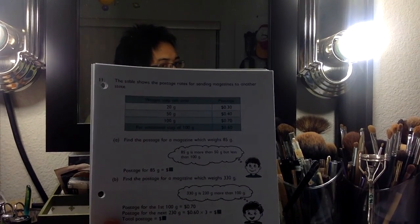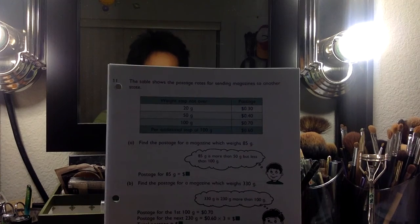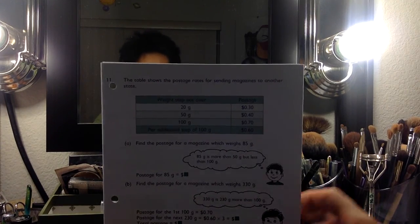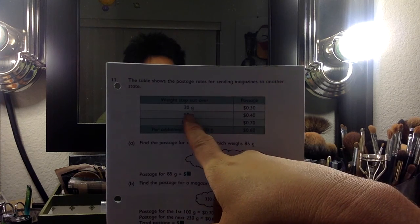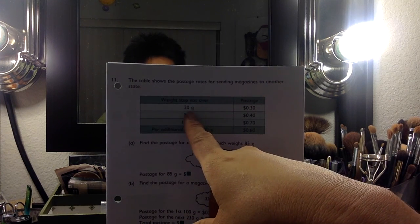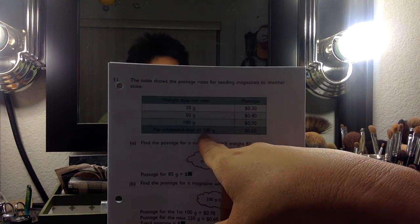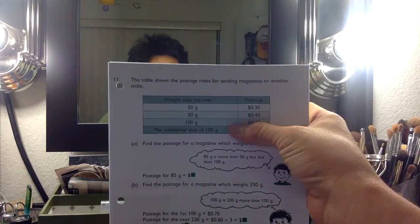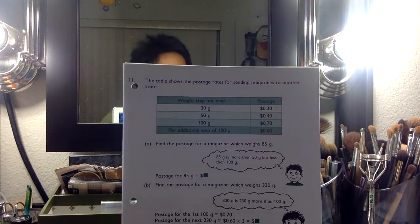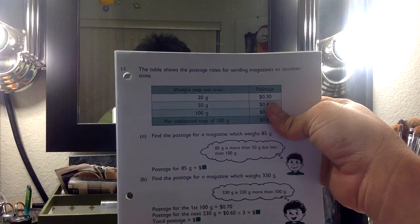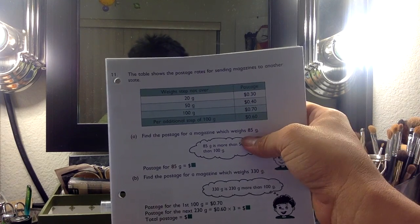Alright. A table shows the postage rates for sending magazines to another state. If the weight is not over 20 grams, 50 grams, and 100 grams, depending on the weight of the magazine itself, the postage changes. That makes sense. Find the postage for a magazine which weighs 85 grams.